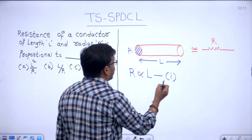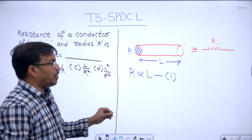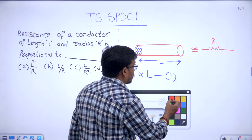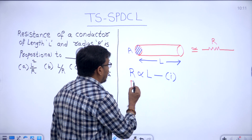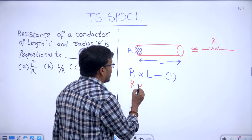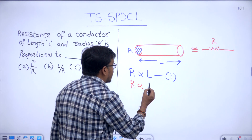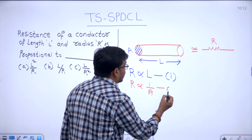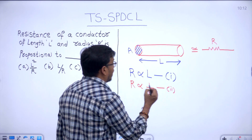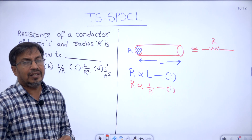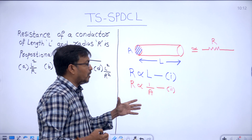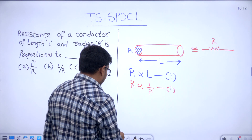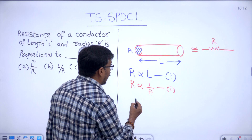The second property is: resistance of the conductor also depends on the cross-sectional area. It is inversely proportional to cross-sectional area. Combining both equations: R is directly proportional to L divided by A.